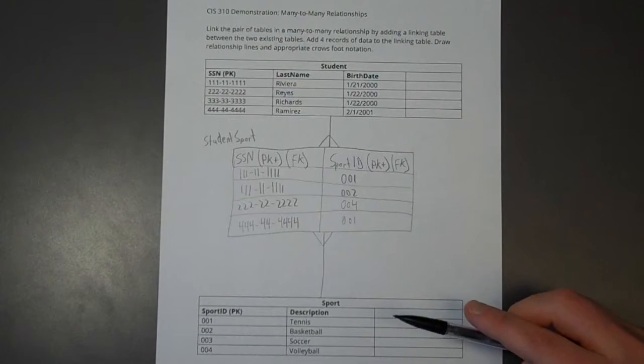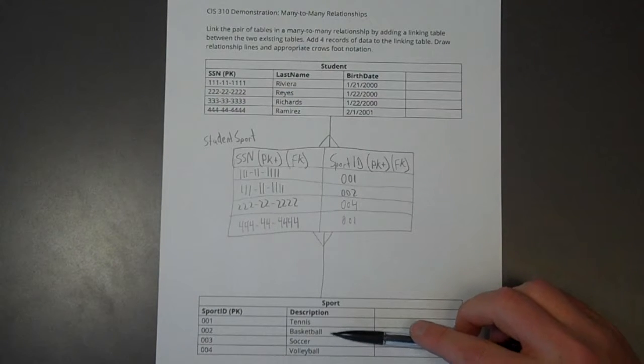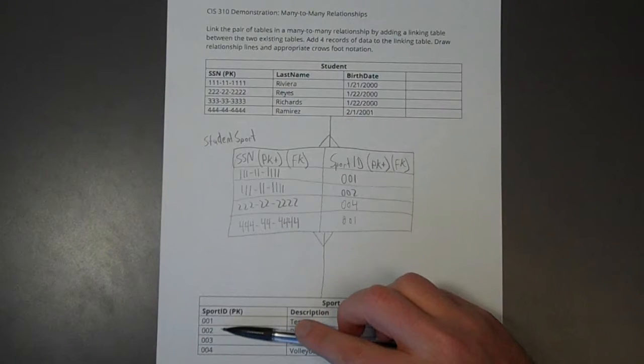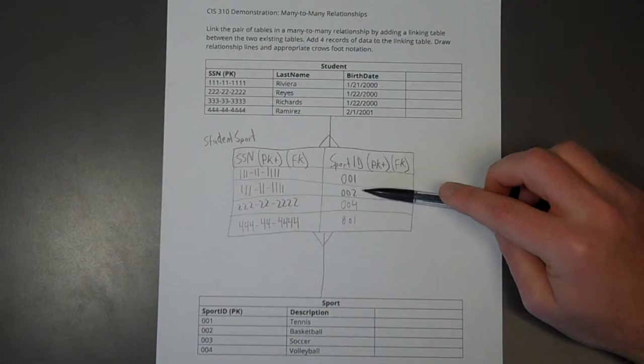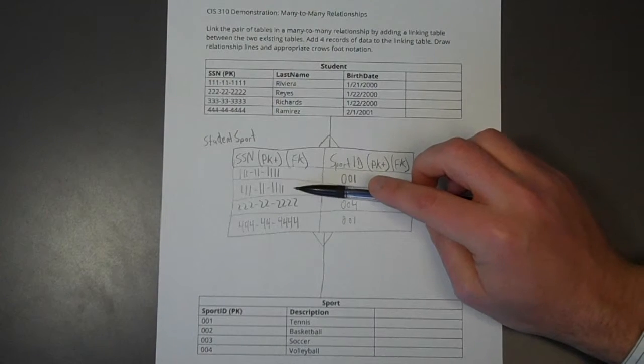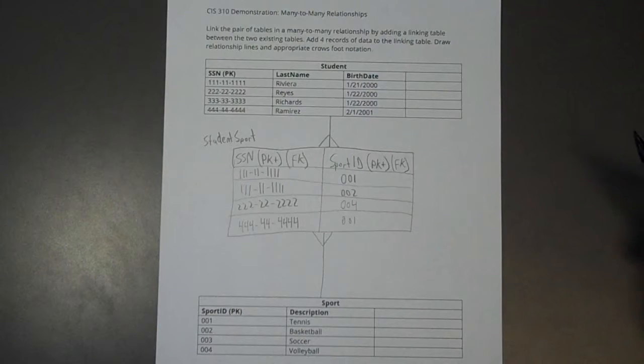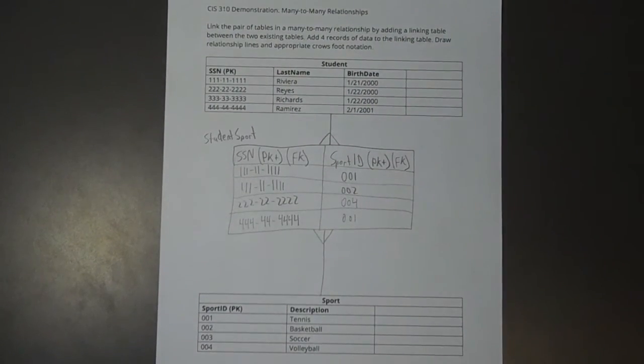And then to determine which students are playing basketball, for instance. So I would see that sport 002. I'd go up to this table. I see 002 here. And I can determine, oh, this student with this social security number, which is Riviera, is the student playing basketball. 002.